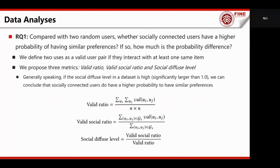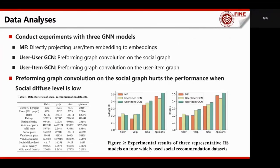We define two users as a valid user pair if they interacted with at least one same item. Under the first RQ, we propose three metrics: valid ratio, valid social ratio, and social diffuse level. We evaluate how well the dataset satisfies the social influence theory. Generally speaking, if the social diffuse level is high, we can conclude that socially connected users do have a higher probability of having similar preferences.